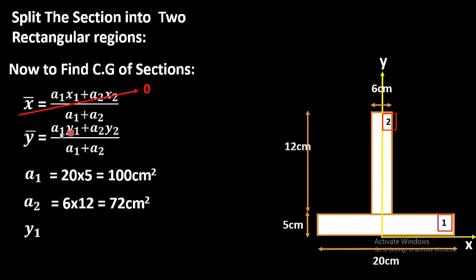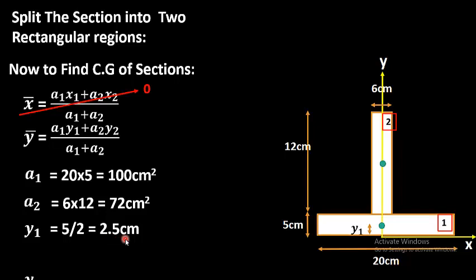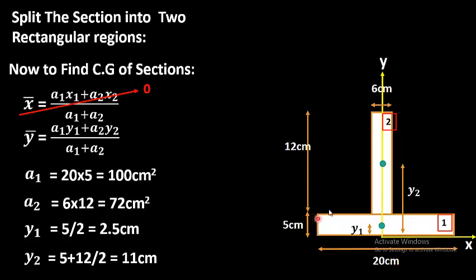Now we need A1, A2, y1, and y2. y1 is the distance of the centroid of region 1 along the y-axis. Since the centroid of a rectangular region lies at its center, y1 = 5 ÷ 2 = 2.5 cm. y2 is the distance of the centroid of region 2 from the x-axis along the y-axis. It equals 5 plus half the height of the second region: 5 + (12 ÷ 2) = 11 cm. So now we have A1, A2, y1, and y2, and we will put these values into the y-bar formula.